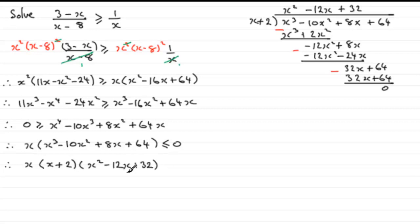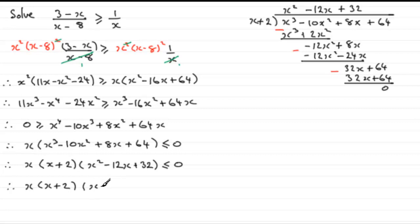So we have x times (x plus 2) times (x squared minus 12x plus 32), all less than or equal to 0. The quadratic factor also factorises: two numbers that multiply to 32 and sum to minus 12 are minus 8 and minus 4, giving (x minus 8)(x minus 4). This checks out to give x squared minus 12x plus 32.